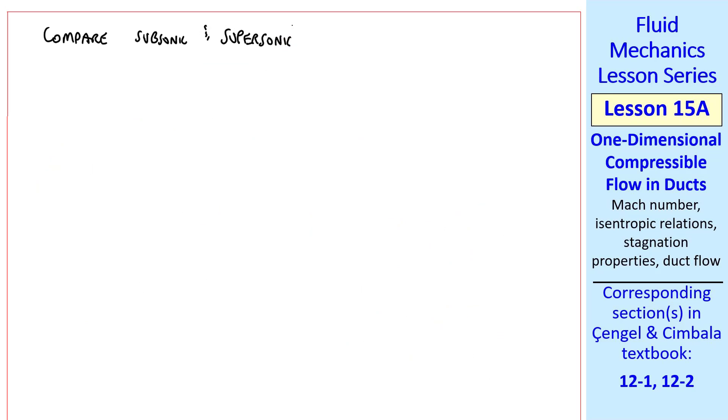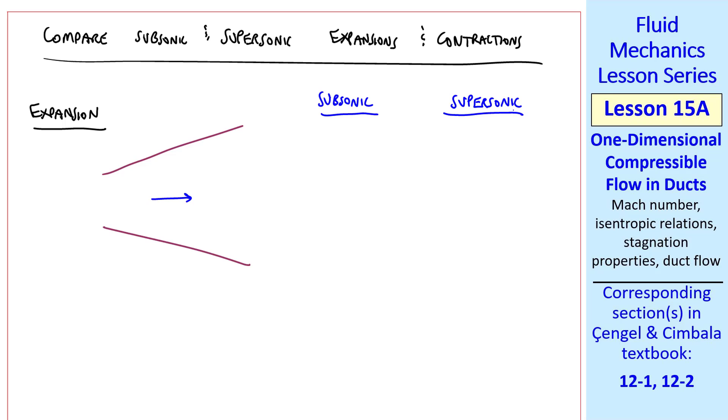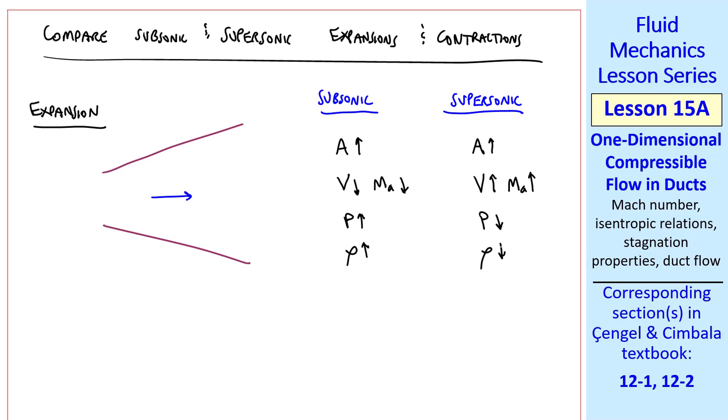Let's compare subsonic and supersonic expansions and contractions. First consider expansions. Flow will always be from left to right. In both cases, area is going up in this expansion. For subsonic flow, V goes down and Mach number goes down. For supersonic flow, V goes up and Mach number goes up. For subsonic flow, pressure goes up, as we discussed regarding subsonic diffusers. But in supersonic flow, the pressure goes down. Density also has opposite behavior. All of these variables behave exactly oppositely comparing subsonic and supersonic flow. For subsonic flow, we call this a subsonic diffuser. For supersonic flow, we call this a supersonic nozzle.